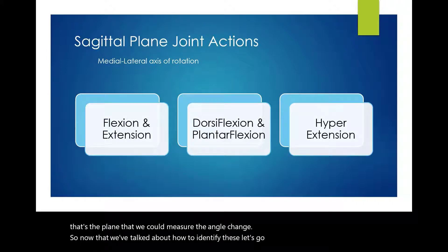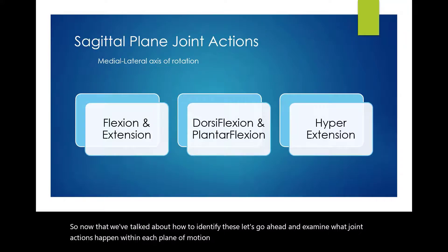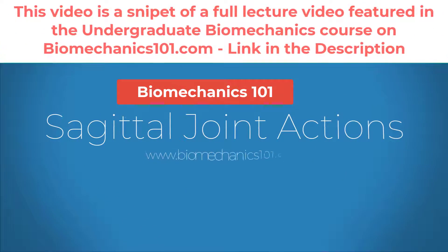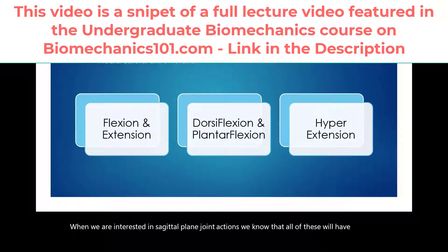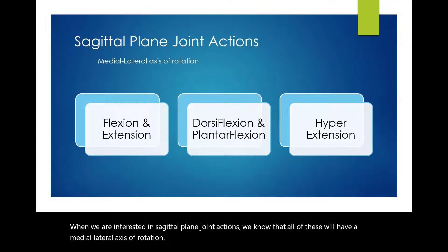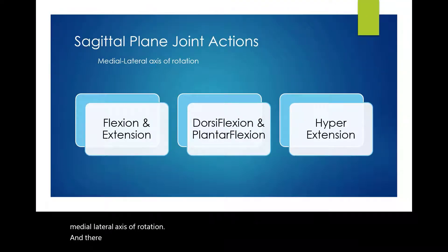Let's go ahead and examine what joint actions happen within each plane of motion. We're going to start with sagittal joint actions. When we are interested in sagittal plane joint actions, we know that all of these will have the medial-lateral axis of rotation, and there are three primary types of joint actions that occur in the sagittal plane.